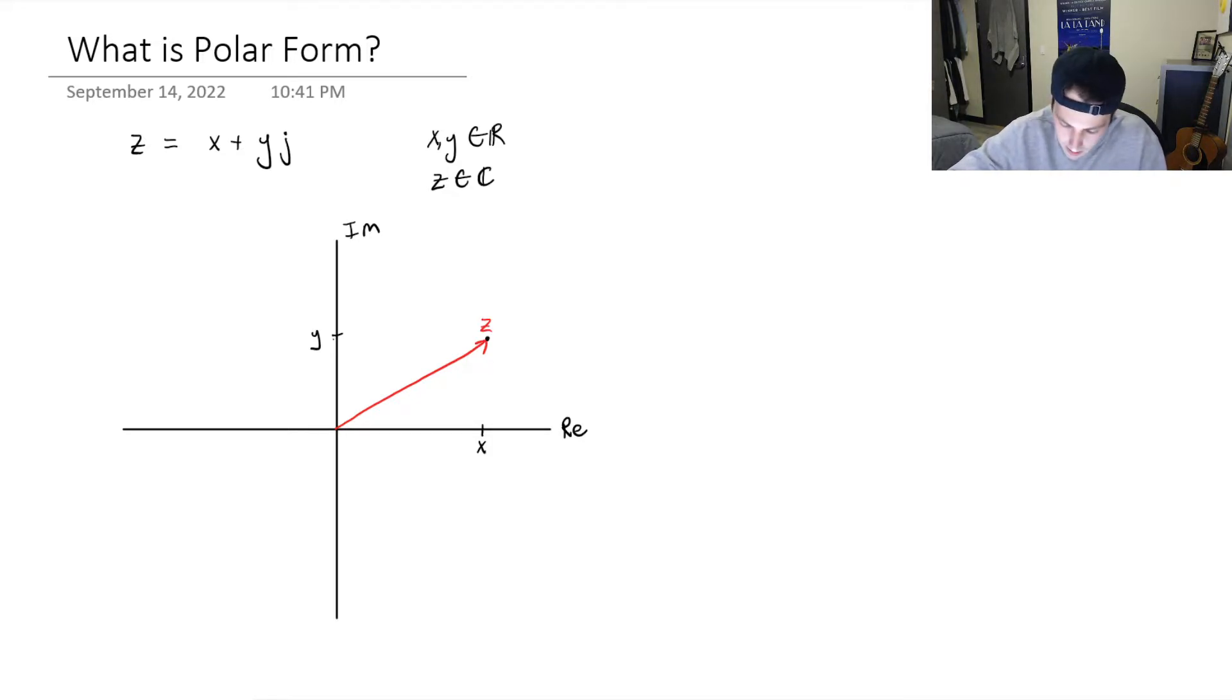Notice that this is a right-angled triangle. The vertical units is y, and the horizontal units is x, and the length of the vector, or the modulus of z, is often expressed as r.